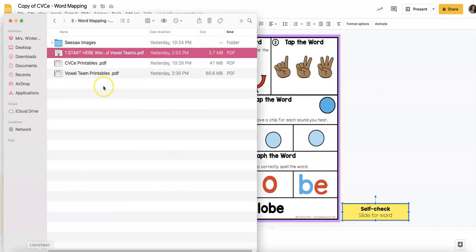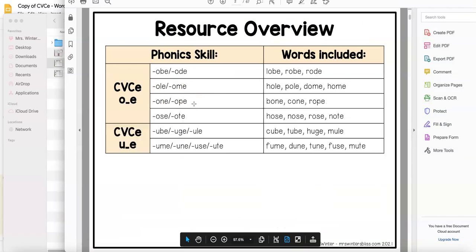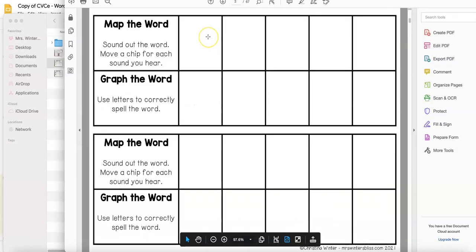There is also a printable activity. So they're the same words and the same activities. Here's a printable that you could laminate so you can use it in small group and do several words, map the word.